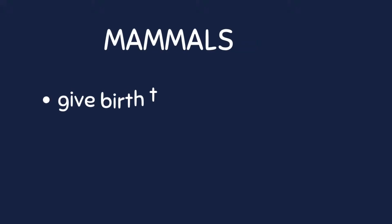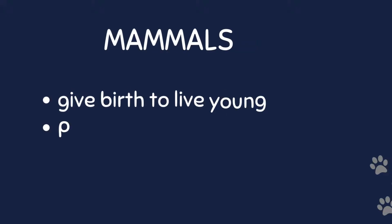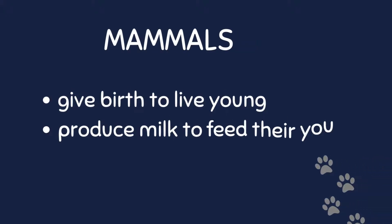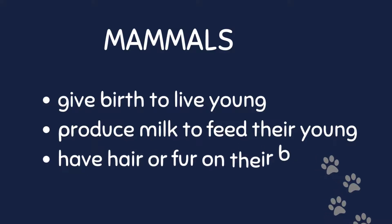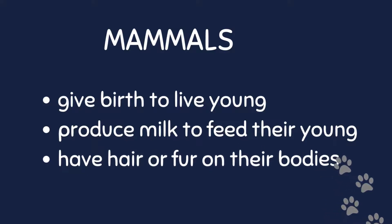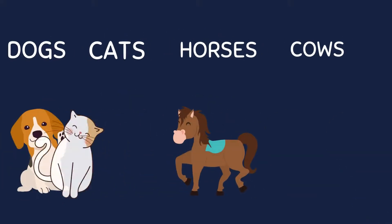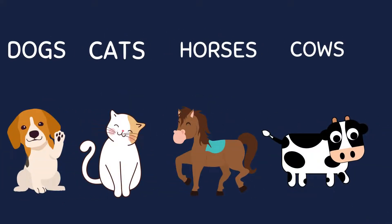Mammals are a group of animals that give birth to live young, produce milk to feed their young, and have hair or fur on their bodies. Some common examples of mammals include dogs, cats, horses, and cows.